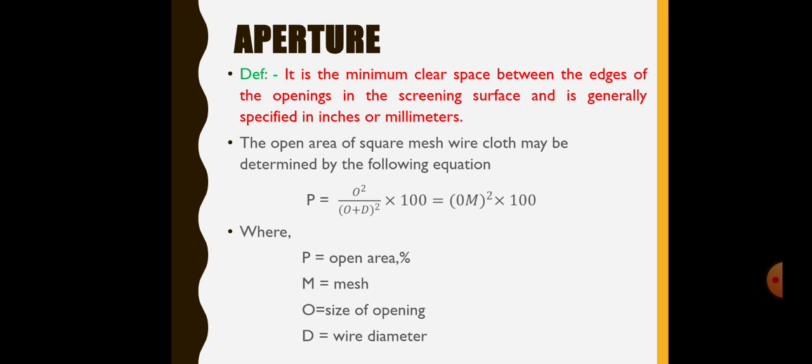Where P is the open area in percentage, M is equal to mesh, O is the size of the opening and D is the diameter of the wire.